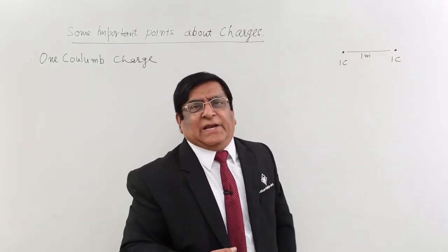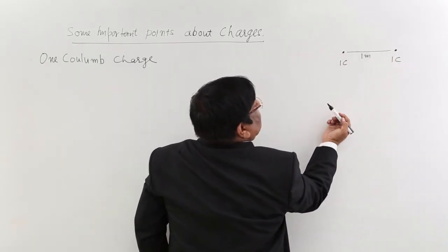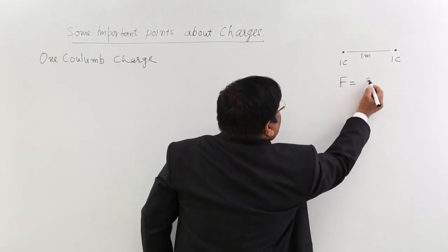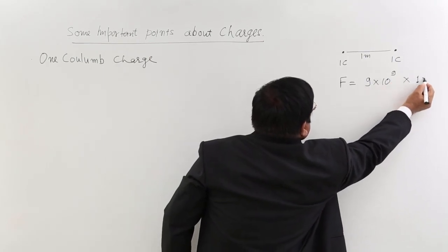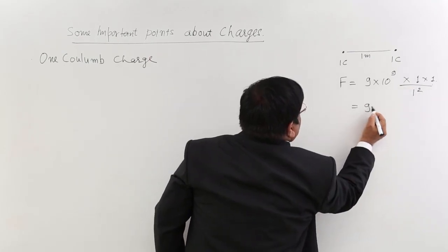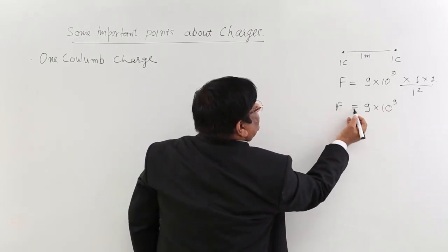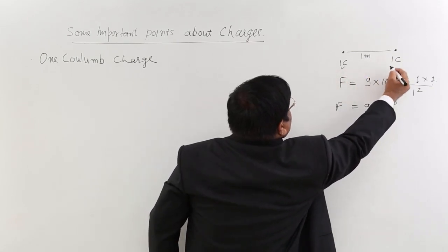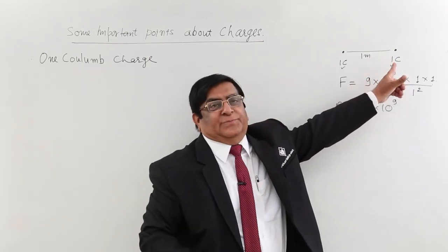This is just to understand: one coulomb, one coulomb, one meter is the distance. Then according to our formula, force will be 9 × 10⁹ × q1 × q2 divided by r². With q1 = 1, q2 = 1, and r = 1, the force is 9 × 10⁹ Newton. This is the force between two 1-coulomb charges placed at 1 meter.